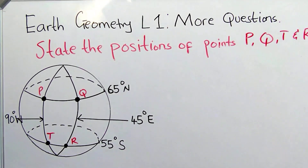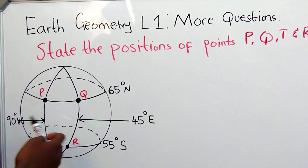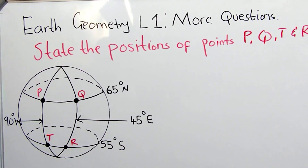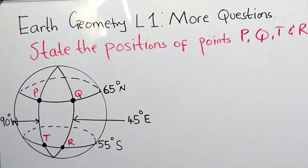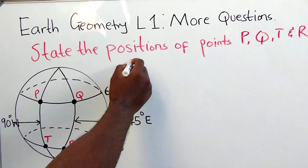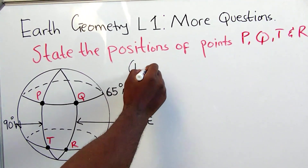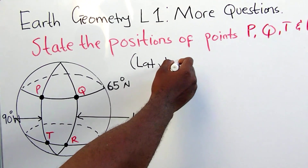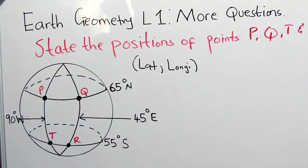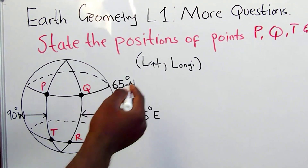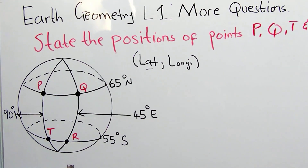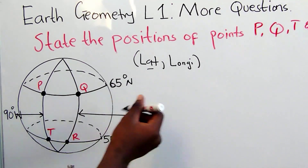Looking at this Earth model, we have points P, Q, T, and R. In Lesson One, we said that when locating positions on the surface of the Earth, you must consider two things: latitude and longitude. These should be written in coordinate form — latitude first, then longitude.